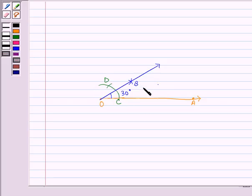Taking C as a center draw an arc. Taking this point as a center draw another arc, and then mark this point as E, join OE.